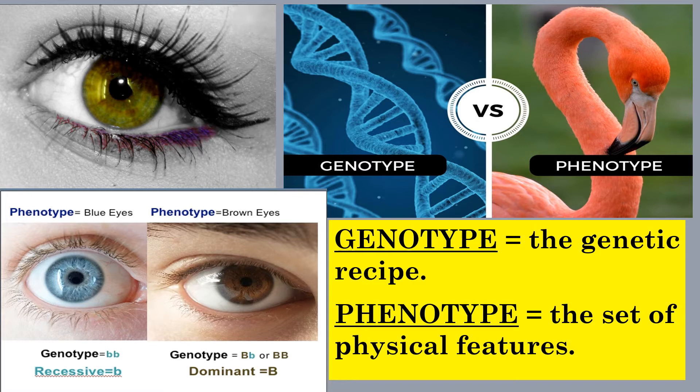We use the word genotype to refer to the genetic recipe that you inherit. We use the word phenotype to mean your actual physical features. For example, I have hazel colored eyes — that's my phenotype. But I'm carrying a gene for blue eyes that I got from my father because he had blue eyes. So I have the recipe for blue eyes in my genotype and could pass that on to my offspring. Genotype and phenotype are not always the same thing.